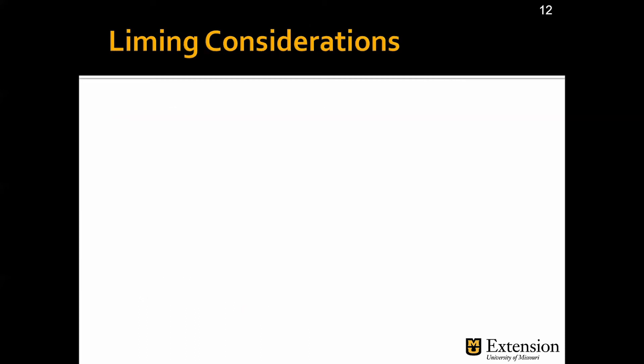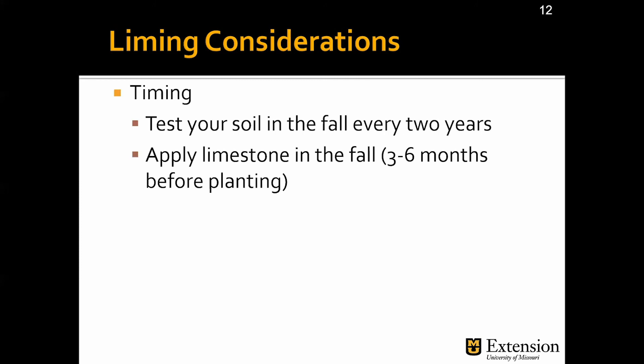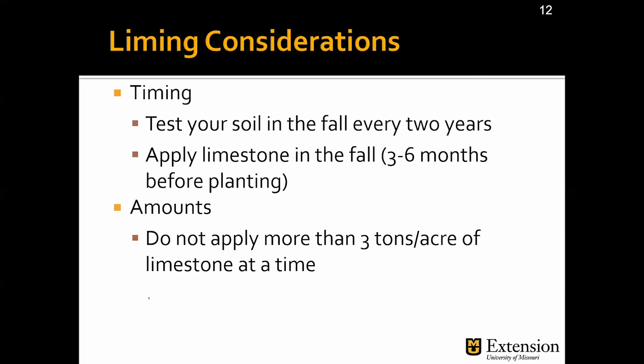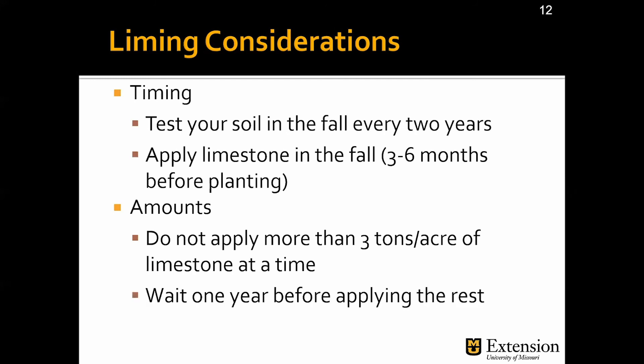Before adjusting the pH of the soil, consider the timing — both when you test your soil and when you apply the lime. Ideally, you should test your soil in the fall so you have time to purchase and apply limestone and give it enough time to react and adjust the pH before planting your crop the following year. It takes on average three to six months for the limestone to react, so plan accordingly. Try not to apply more than three tons of limestone per acre per application; if you need more, wait between six months and a year before applying the rest. Try to incorporate the limestone to a depth of four to eight inches.